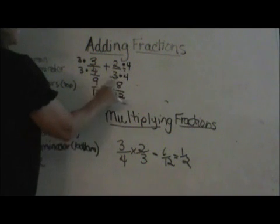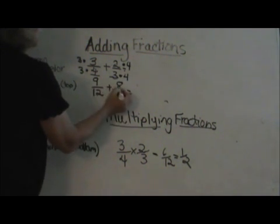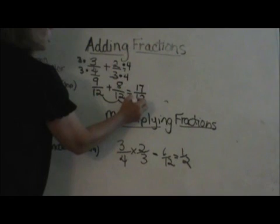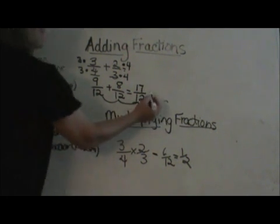So I get an eight. Now I add my numerator, so I add the top. Eight plus nine is seventeen over twelve. And notice I do not change the denominator. I just bring it over.